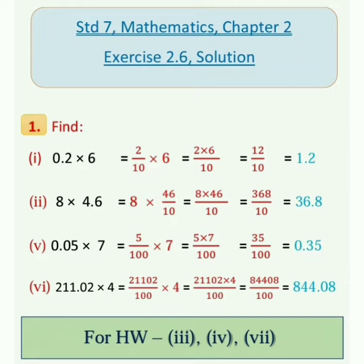First sum, find. First one: 0.2 into 6 is equal to 2 upon 10 into 6 is equal to 12 upon 10, which is equal to 1.2. Sum number 2: 8 into 4.6. We can write 4.6 as 46 upon 10, so 8 into 46 upon 10 is equal to 36.8.